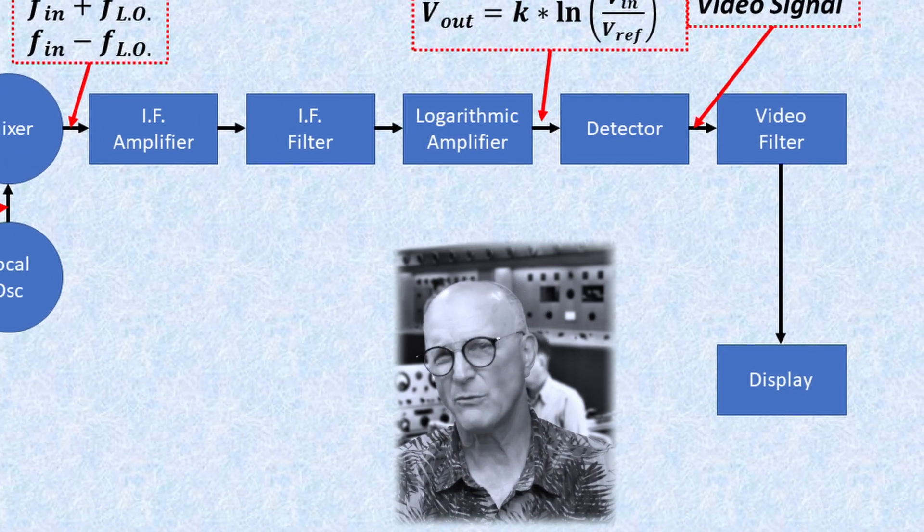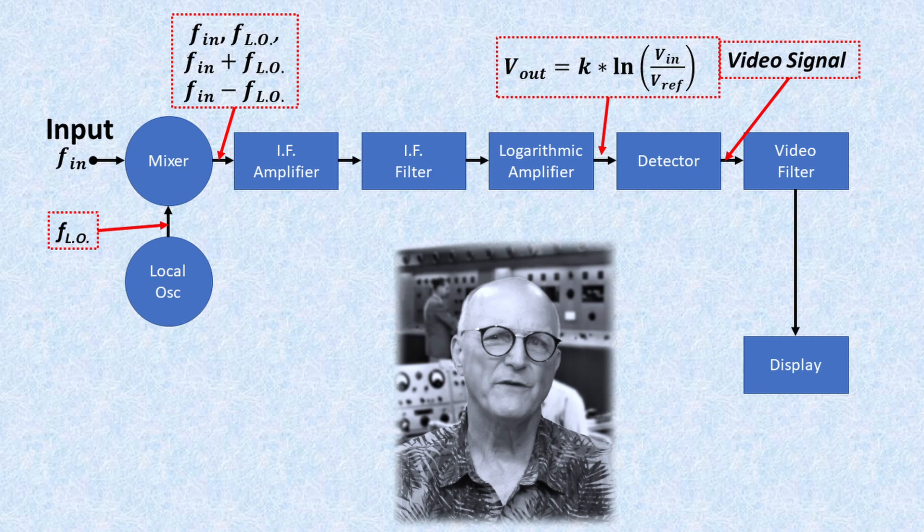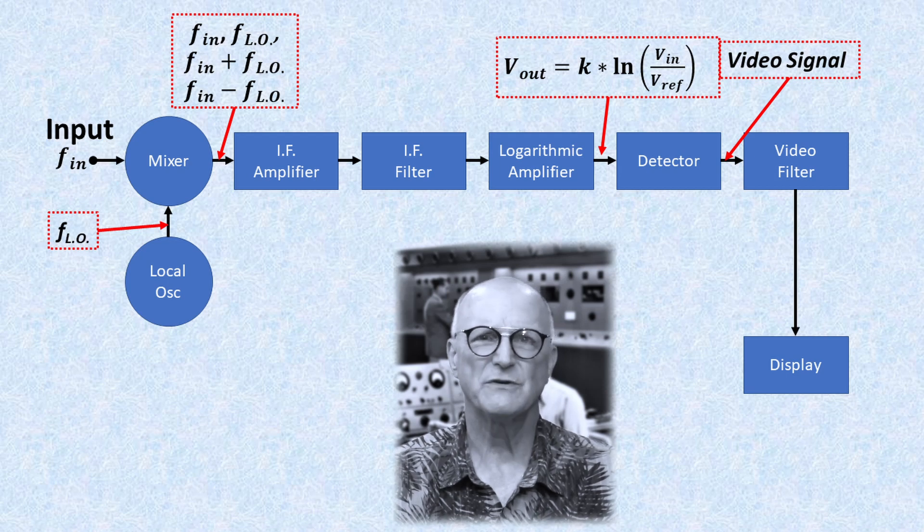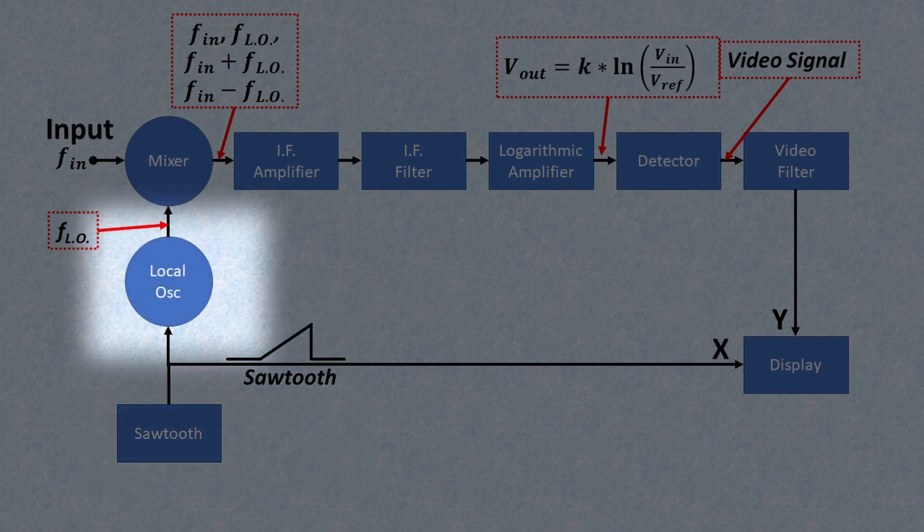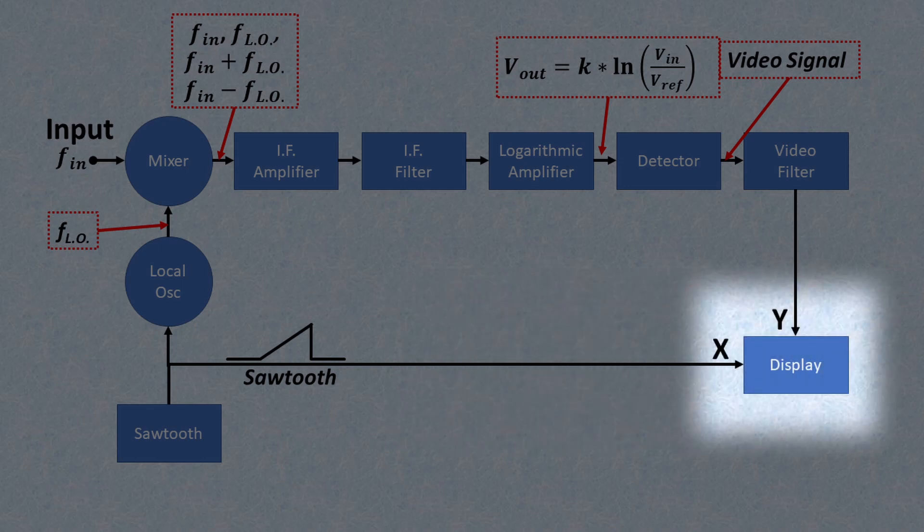Now we have to talk about frequency control, because what we've covered so far is tuned to a single frequency determined by the frequency of the local oscillator. Frequency control is provided by way of a sawtooth generator, which controls the frequency of the local oscillator and serves as the horizontal sweep signal.